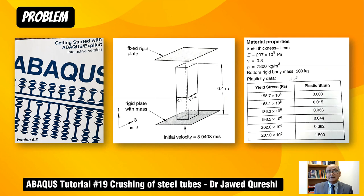I have taken this example from the Getting Started with Abaqus Explicit guide, version 6.3. Note that in newer versions this example is not included, but I found it very useful for students and engineers. In this example we have top and bottom plates; the top plate is fixed and at the bottom plate we apply a velocity of 20 miles per hour, which is 8.94 meters per second. Shell thickness is 1 mm, E is 207 GPa, Poisson's ratio 0.3, density 7800 kg/m³, mass of rigid body is 500 kg, and plasticity data with a stress-strain curve is given.